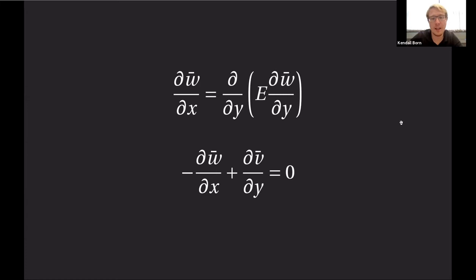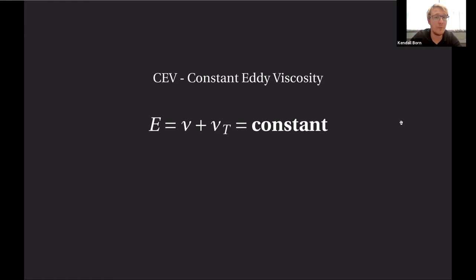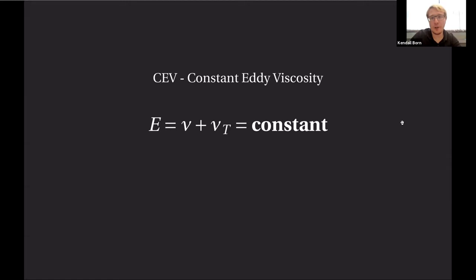Now let's look at how we model the different kinematic eddy viscosities. The first and simplest method is to set this viscosity to be some constant — the effective viscosity, which is the sum of the kinematic viscosity and the kinematic eddy viscosity, equals some constant. Through some analysis we can find what this constant should be. The idea is that throughout all the flow we assume the eddy viscosity to be constant. This isn't very realistic, but it can be a pretty good approximation.